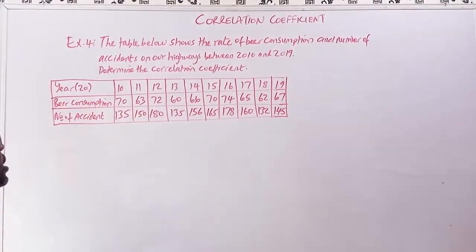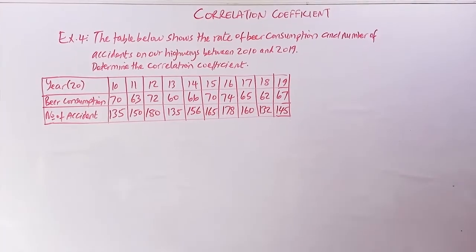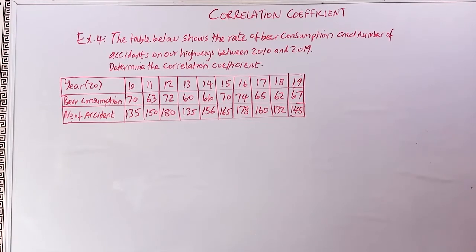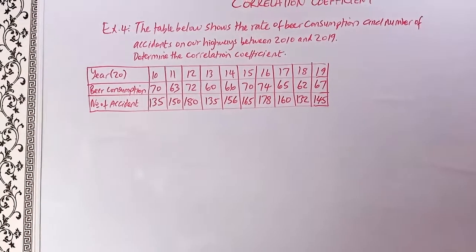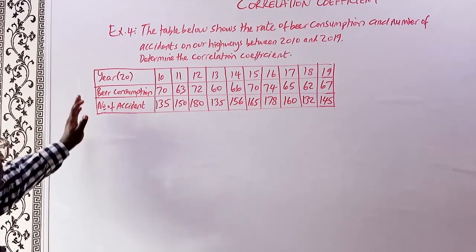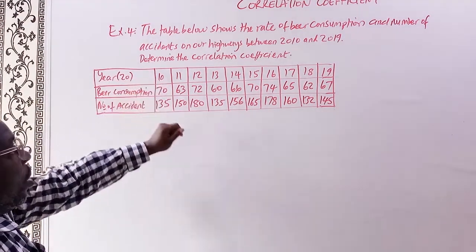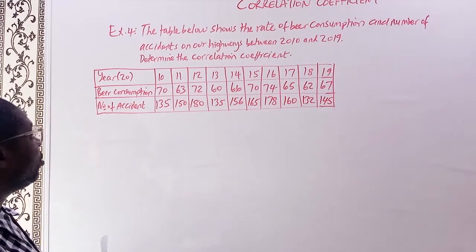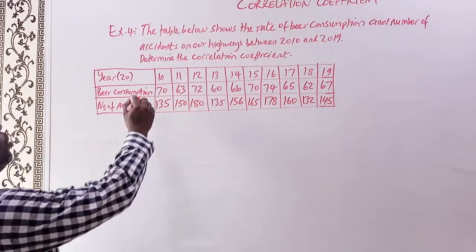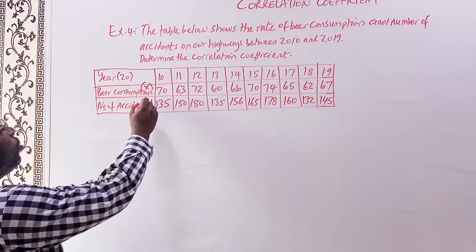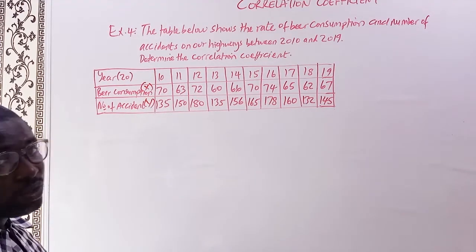We're looking at Example 4. The question says: the table below shows the rate of beer consumption and the number of accidents on our highways between 2010 and 2019. The question is to determine the correlation coefficient. We have the years 2010 through to 2019, with beer consumption represented by X and the number of accidents represented by Y. Let's now solve this problem together.